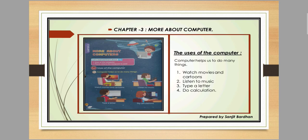Chapter Number Three is More About Computers. The computer helps us do many things. First is watch movies and cartoons — we can all watch movies and cartoons on a computer. Next is listen to music — we can easily listen to music on a computer. Next is type a letter — when we want to type any type of letter, we can use a computer.